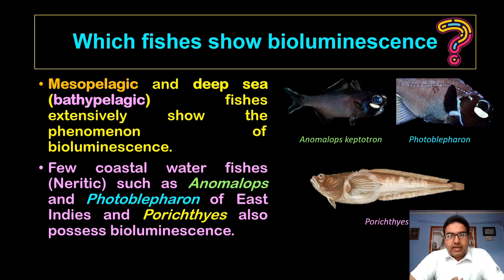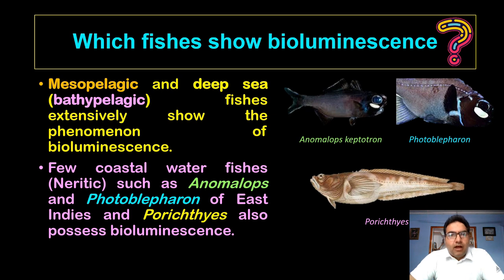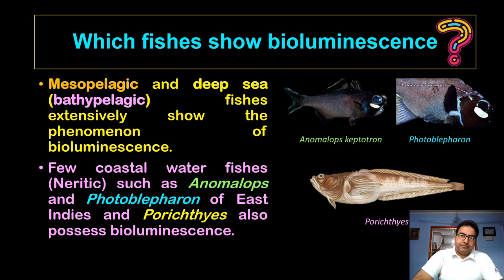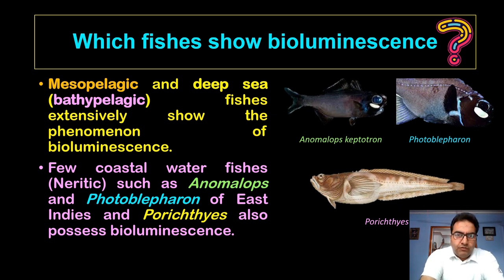Most bioluminescent fishes are bathypelagic, living in deeper waters where there is no light. That is why they evolved in such a manner that they produce their own light to survive in extreme dark conditions. Besides mesopelagic and deep sea fishes, a few coastal water fishes — which we call neritic — also show bioluminescence.